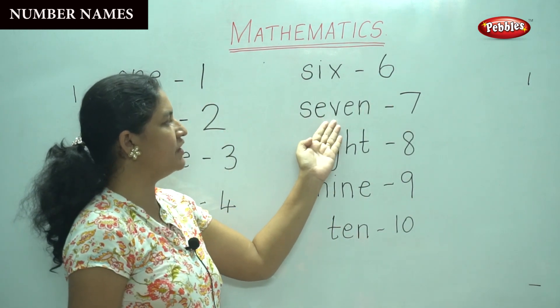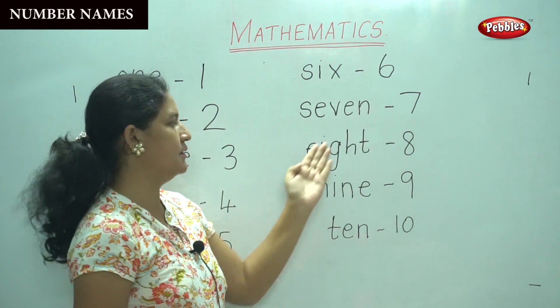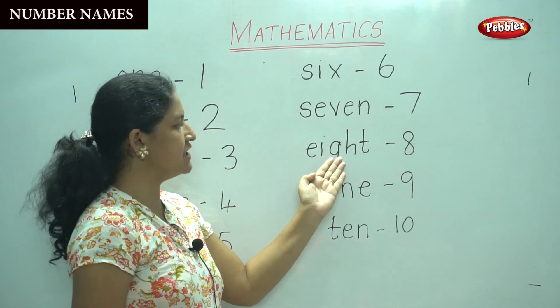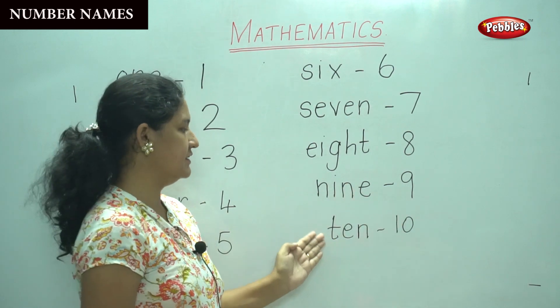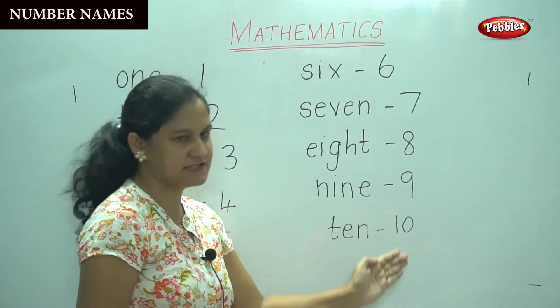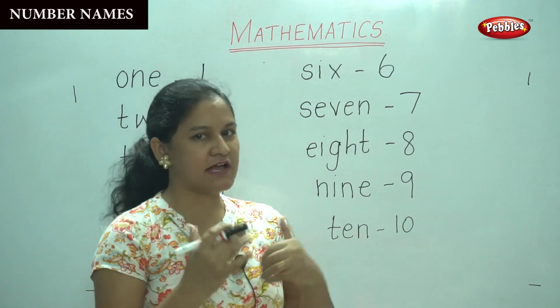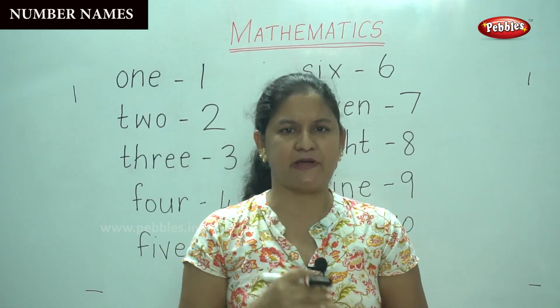S-E-V-E-N, seven. E-I-G-H-T, eight. N-I-N-E, nine. T-E-N, ten. So I would like you to write each spelling three times so that you will be able to register it in your mind.